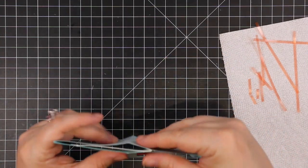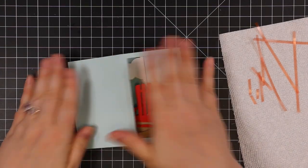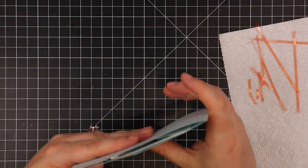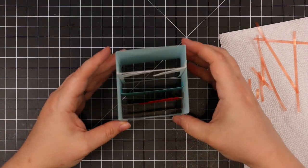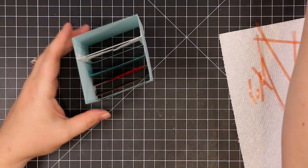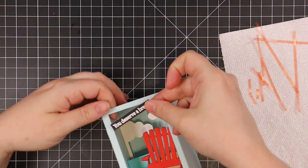This is what I meant by reinforcing those score lines, because you want this to be able to fold flat. The whole point of this is it will fit in an A2 envelope, which I will show at the end.